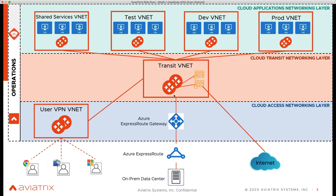After deploying everything, a team mentioned they had a special application running in AWS. The answer was simple because they had adopted the MCNA architecture: it's just a matter of deploying a transit VPC in AWS and connecting it to the existing Azure transit. Aviatrix handles all route propagation, network correctness, and ensures enterprise-grade access to AWS.